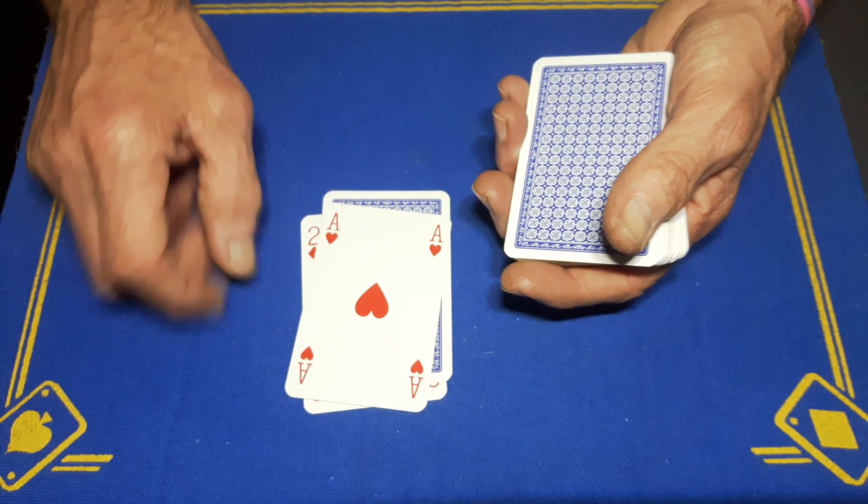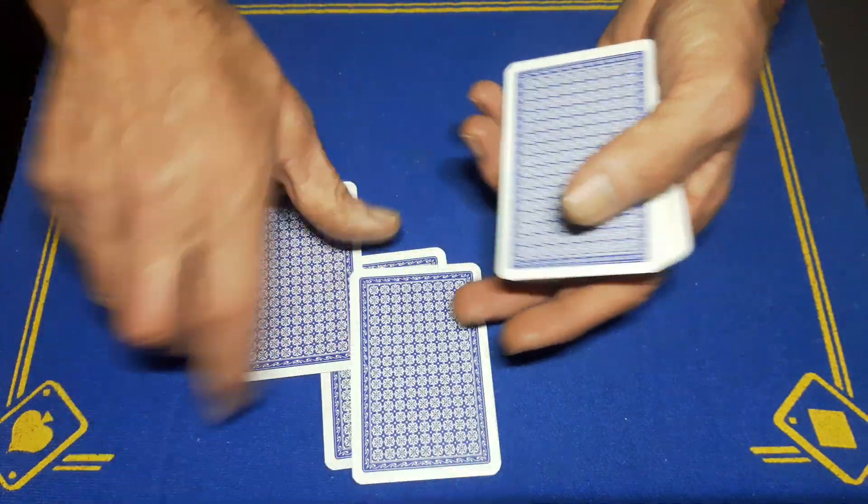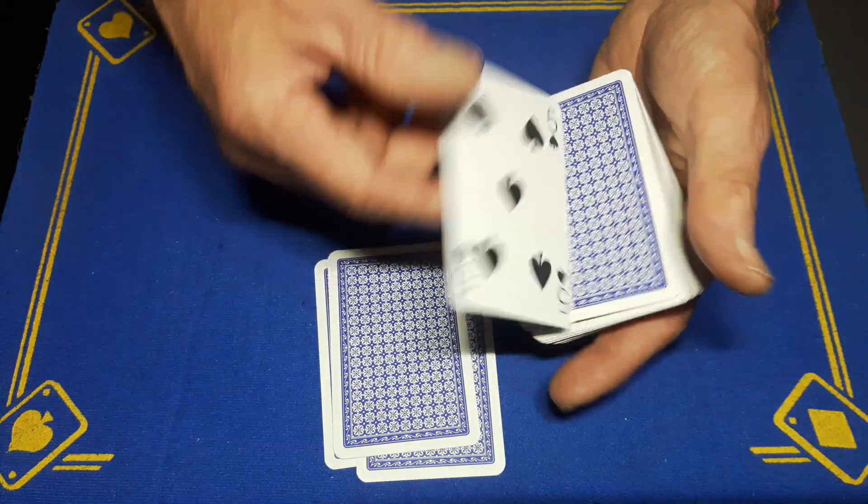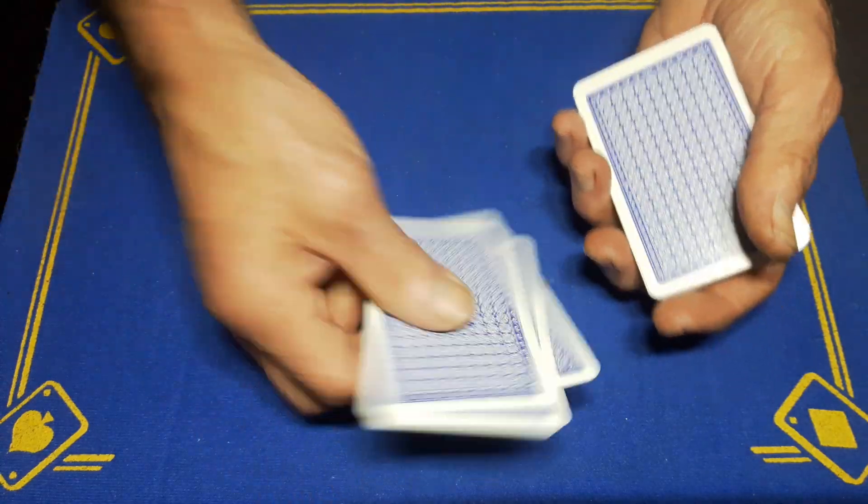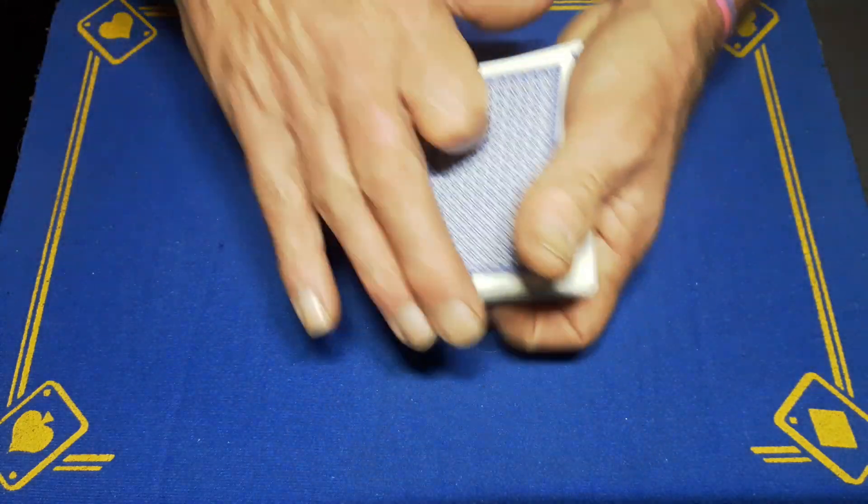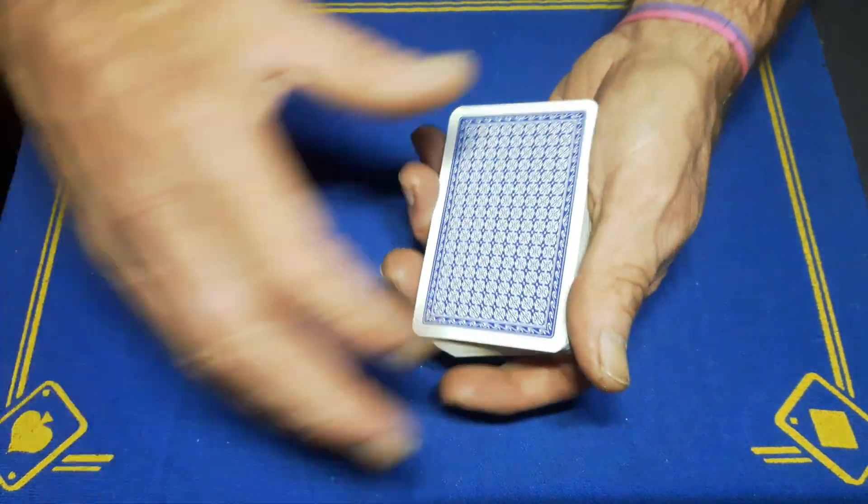But this is just you setting up the trick, because the next card will be that five that you are going to use to force their card. So you're going to place this little portion on the bottom, and then you'll give the card to the spectator.